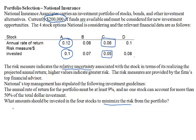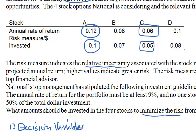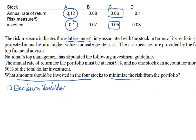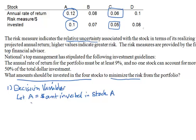As usual, first we define the decision variables. The decision variables should be the amounts invested in these four stocks. We'll use the letters A, B, C, D for the names of the decision variables. So we let A be the amount of money invested in stock A, and similar definitions for the others.